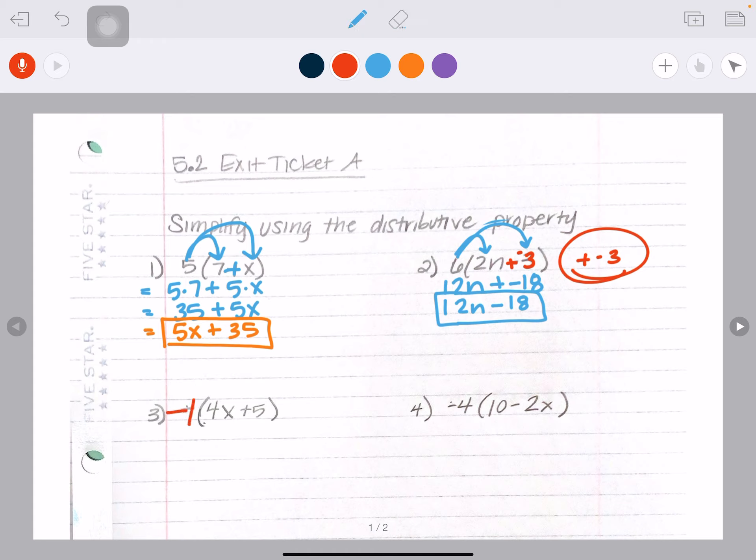So as I look at number four, I see a negative four here that has to get distributed. But I see this minus. So I'm going to change that to plus and make this a negative two.